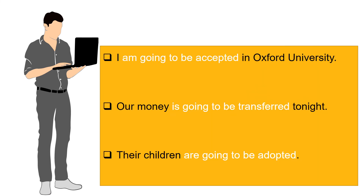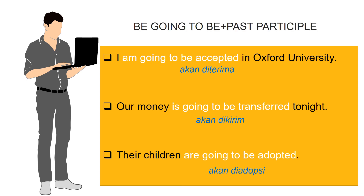Here are more examples. First: 'I'm going to be accepted in Oxford University' — the pattern is 'am going to be accepted,' meaning 'akan diterima.' Second: 'Our money is going to be transferred tonight' — 'is going to be transferred' means 'akan dikirim.' Third: 'Their children are going to be adopted' — 'are going to be adopted' means 'akan diadopsi.' These examples all share the pattern: be (is/are/am) + going to + be + past participle. This is how we construct passive sentences with 'be going to.'